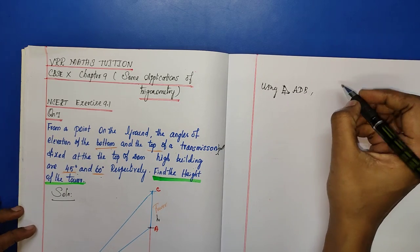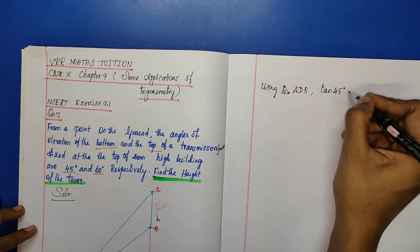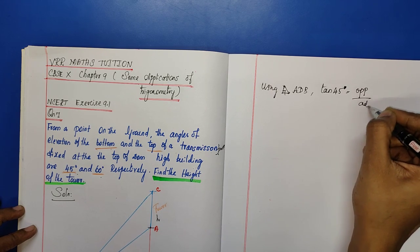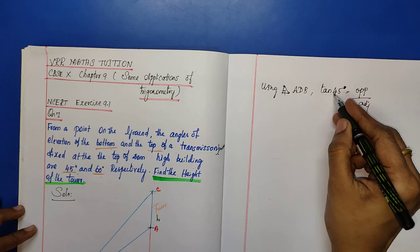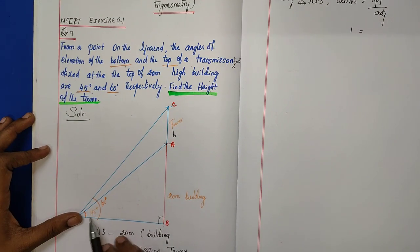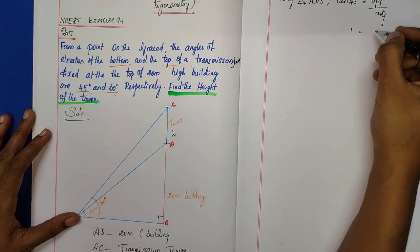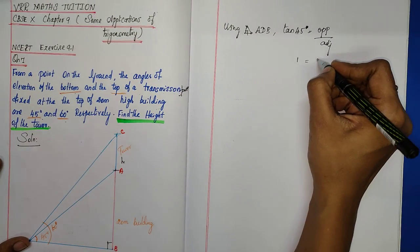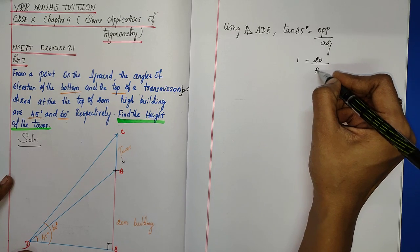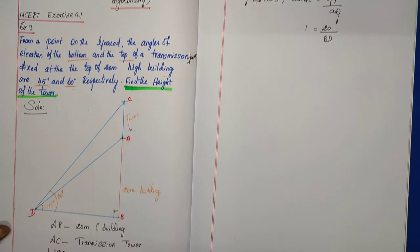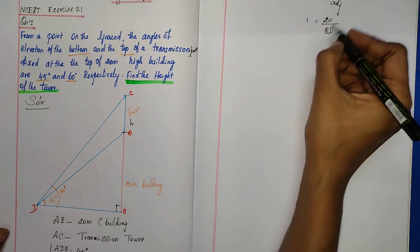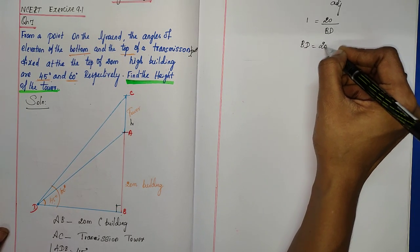Find tan 45 degrees: tan 45 = opposite / adjacent. We know tan 45 = 1. The opposite side is 20 meters (the building height AB). So 1 = 20 / BD, which gives BD = 20 meters.